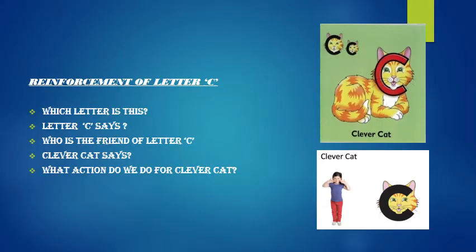So children, did you enjoy Bouncy Ben's rhyme? You liked? Okay. Now children, can you tell which letter is this? Yes, this is letter C. And what does letter C say? Letter C says 'k'. And who is the friend of letter C? The friend of letter C is Clever Cat.